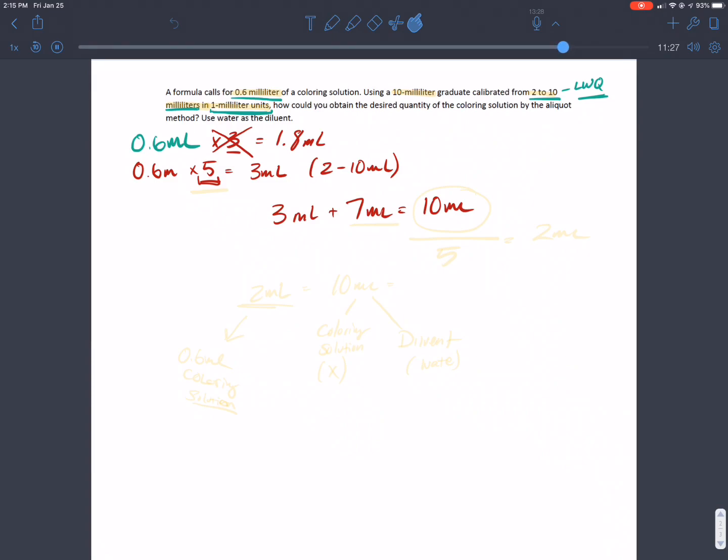So to recap on this, we chose to use 7 milliliters of the diluent so that we can get 10 mLs total. Now it's important that this 10 mLs is within our 2 to 10 mL range, so we're not going to use something like 8 mLs of the diluent, because that's going to give us 11 mLs total, and that's not something that we want to actually use.